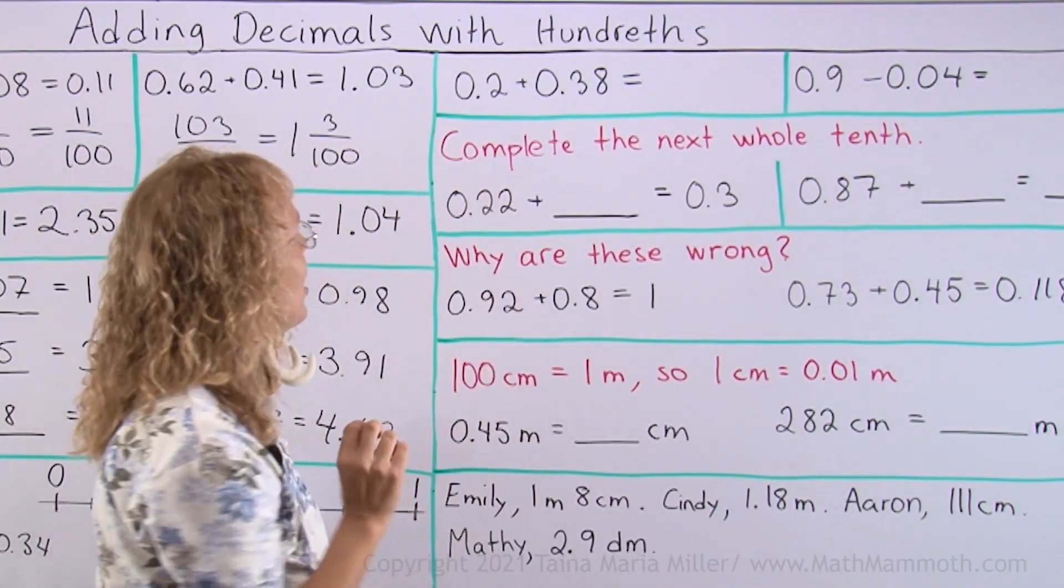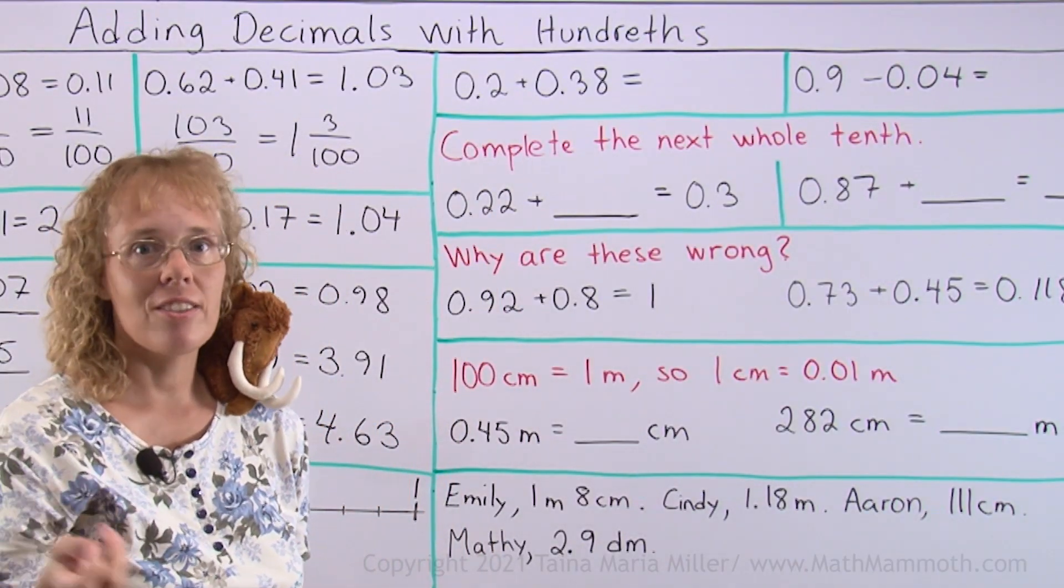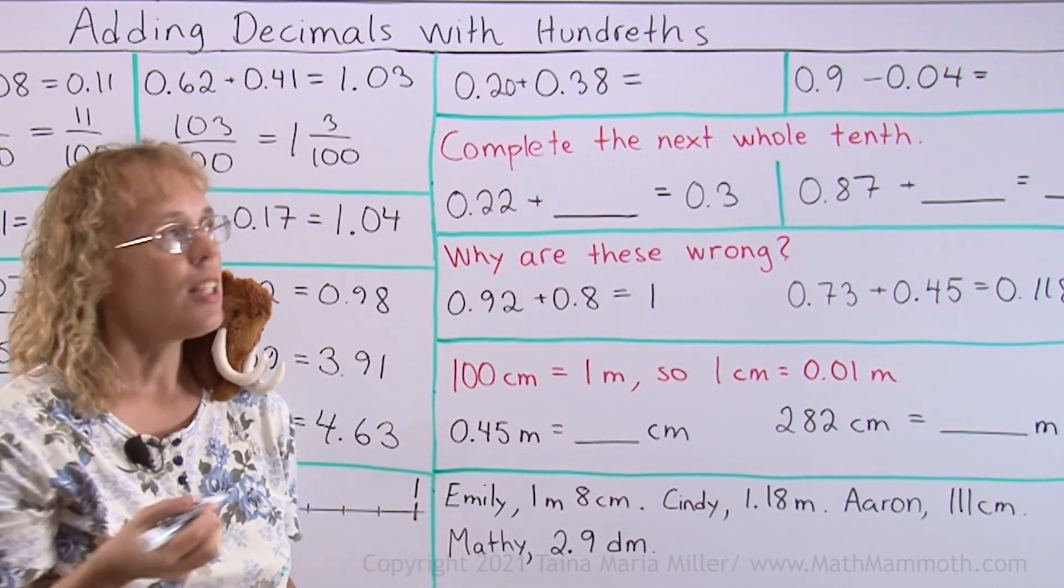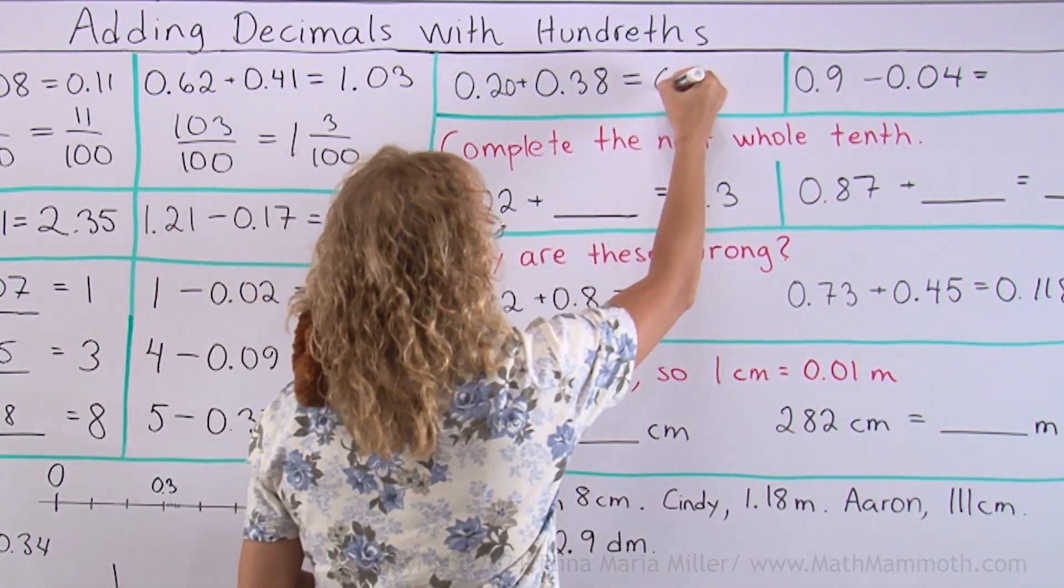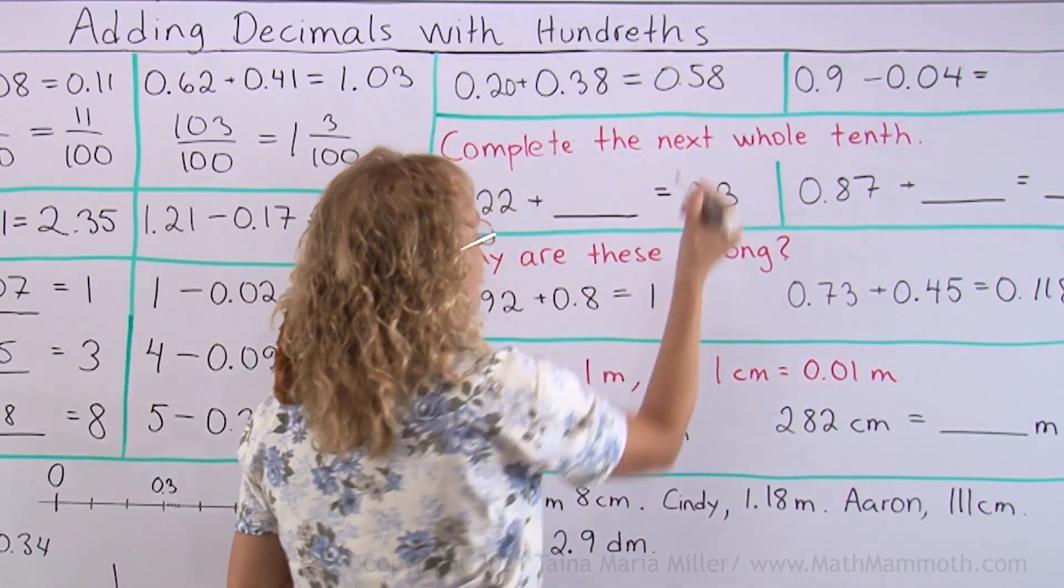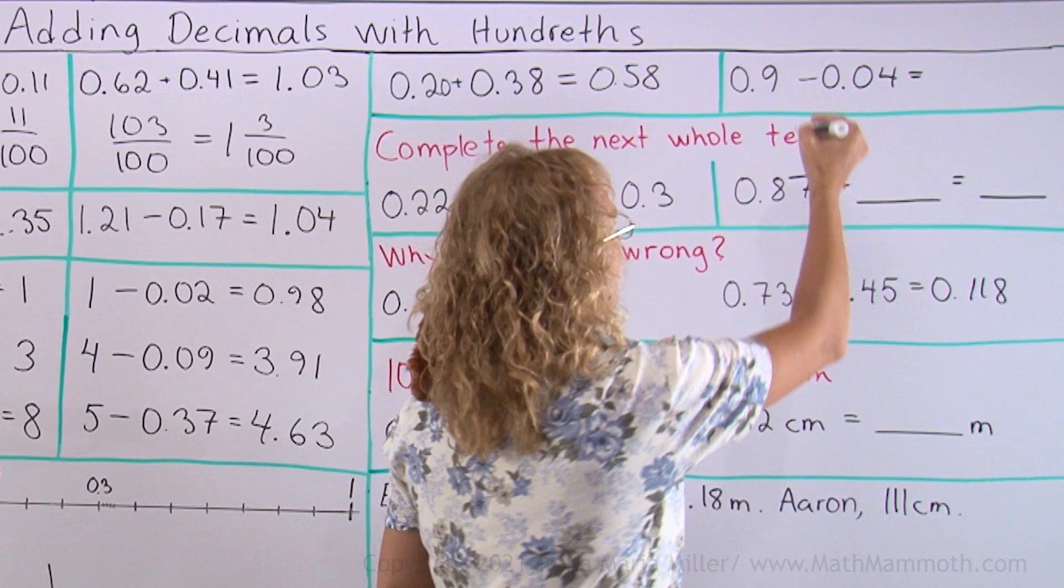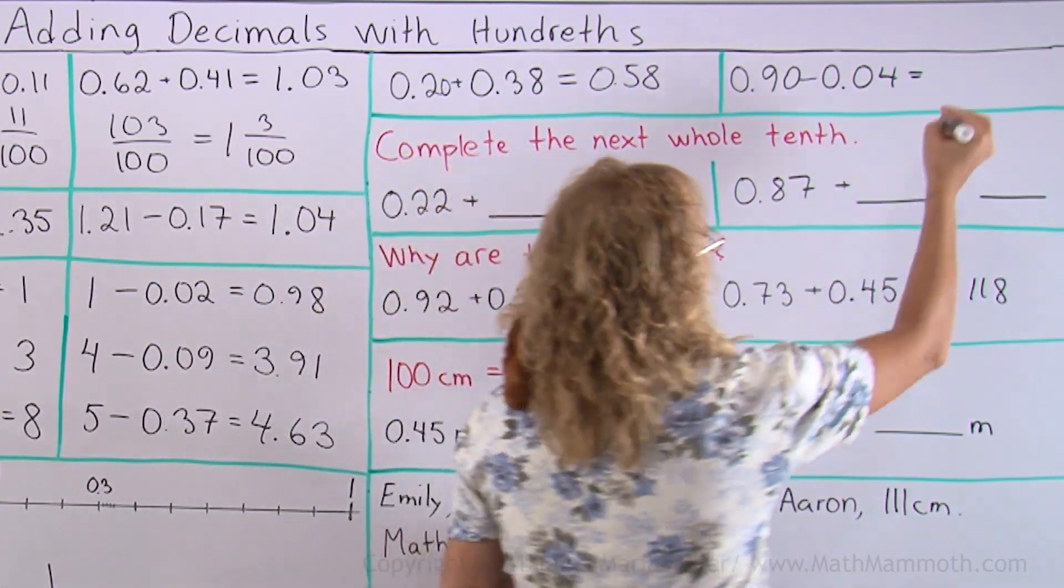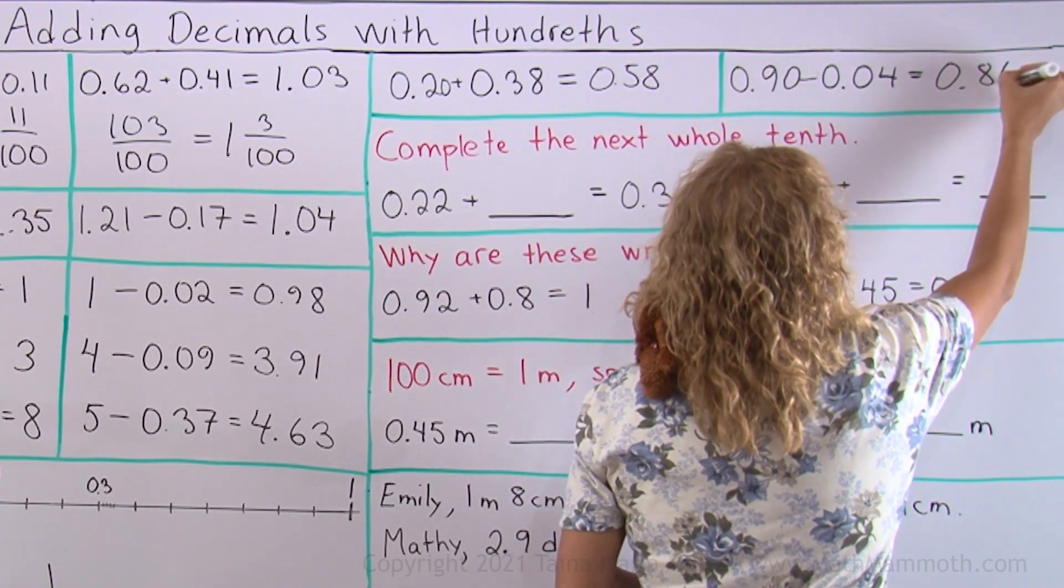Okay, here I have 2 tenths plus 38 hundredths. To this side, I'll tag a 0 to make it 20 hundredths plus 38, so that is 58 hundredths. Over here, again, I will tag a 0 here to make it 90 hundredths, take away 4 hundredths, so that is 86 hundredths.